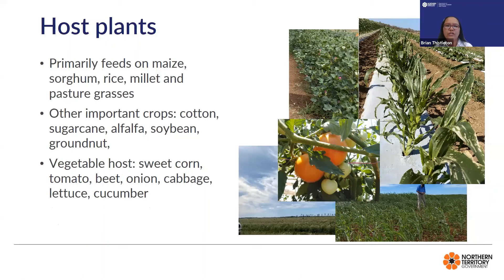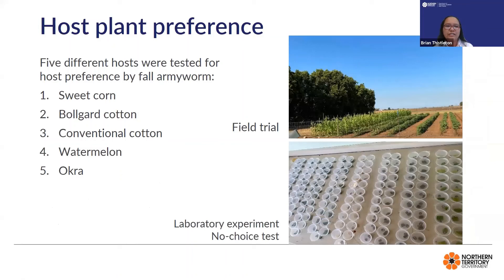In terms of vegetable hosts, sweet corn, tomato, beet, onion, cabbage, lettuce, and cucumber have been reported to be damaged by fall armyworm. Here in the Northern Territory we conducted a field and laboratory experiment — an initial trial to determine host preference. We tested sweet corn, Bollgard cotton, conventional cotton, watermelon, and okra. In the field we found that fall armyworm only feeds on sweet corn. However in the lab, fall armyworm was able to complete its development on sweet corn, conventional cotton, watermelon, and okra. Currently there are reports from Western Australia of fall armyworm feeding on watermelon in the field.